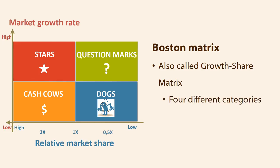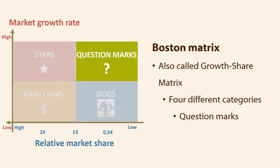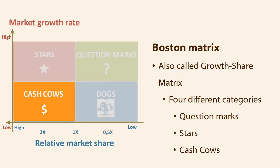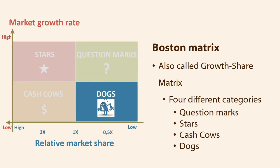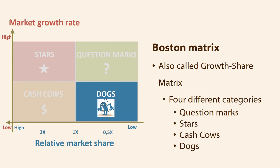The matrix is used by organizations to classify their business units or products into four different categories: question marks, stars, cash cows, and dogs. The products or SBUs are placed in relation to their relative market share and the market growth rate in the industry in one of these four categories.